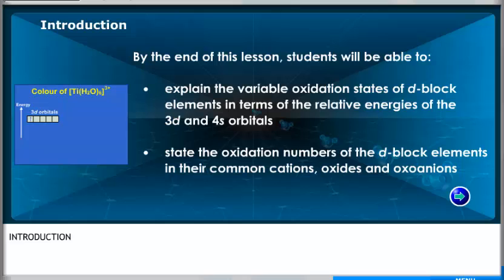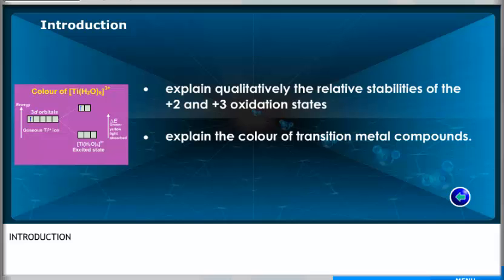By the end of this lesson, students will be able to explain the variable oxidation states of D-block elements in terms of the relative energies of the 3d and 4s orbitals. They will state the oxidation numbers of the D-block elements in their common cations, oxides and oxoanions, explain qualitatively the relative stabilities of the plus 2 and plus 3 oxidation states, and explain the color of transition metal compounds.